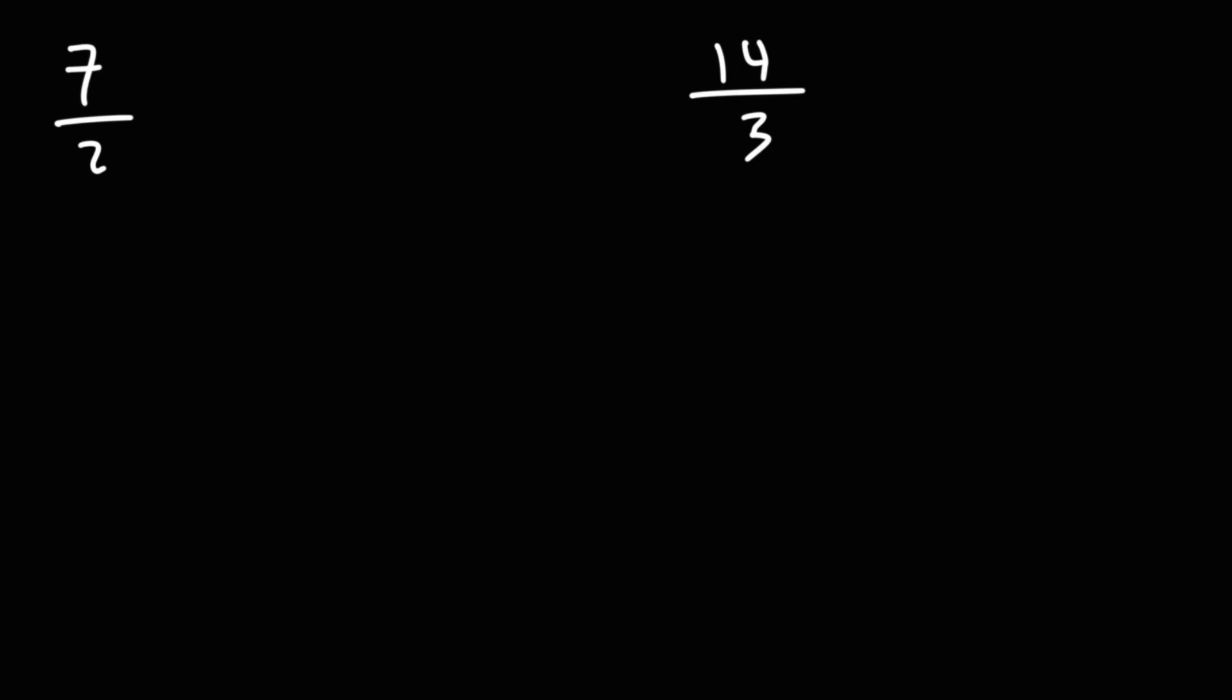In this video, we're going to talk about how to convert an improper fraction to a mixed number using long division. So let's start with the first example, 7 over 2.